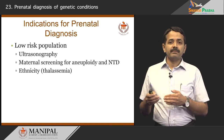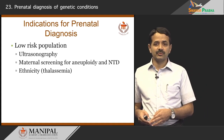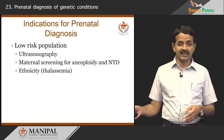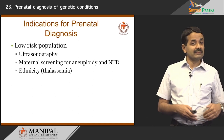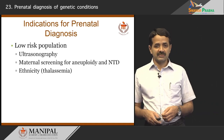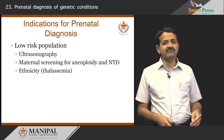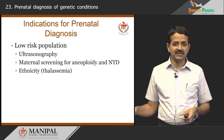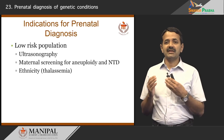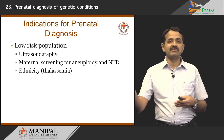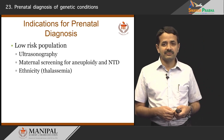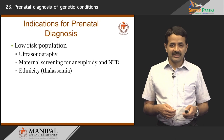Ethnicity can predispose individuals to certain genetic disorders. For example, thalassemia is highly prevalent in India; Tay-Sachs disease is very common in Jews; and cystic fibrosis is very common in Caucasians. Depending on ethnicity, we may have different indications in different populations. This covers the low risk group, for whom there is a basic list of prenatal diagnostic methods for detection of genetic problems.